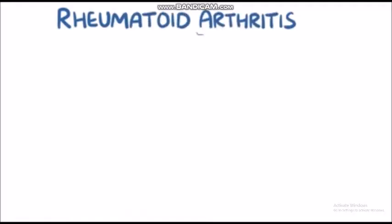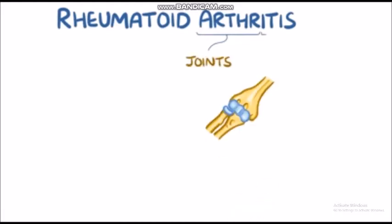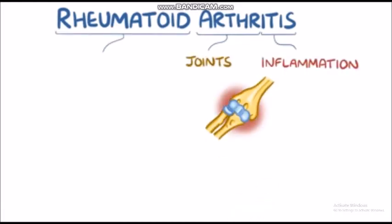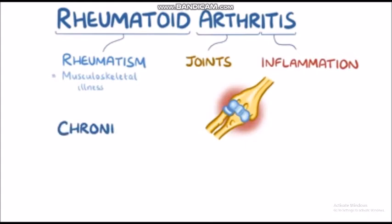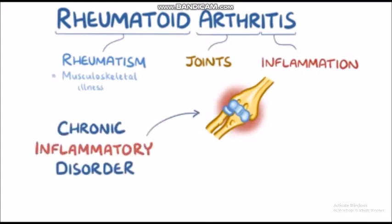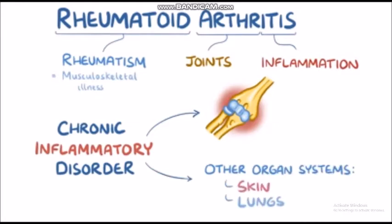Rheumatoid arthritis: 'arth' refers to joints, 'itis' means inflammation, and 'rheumatoid' comes from rheumatism, which broadly refers to a musculoskeletal illness. So rheumatoid arthritis is a chronic inflammatory disorder that mostly affects the joints, but can also involve other organ systems like the skin and the lungs as well.